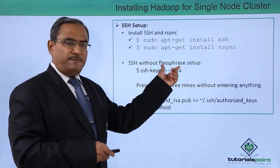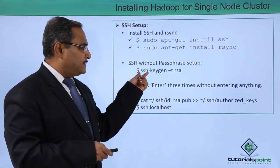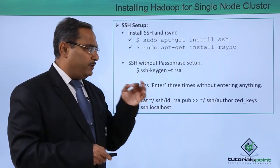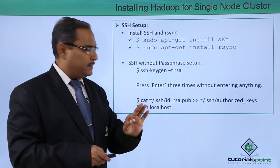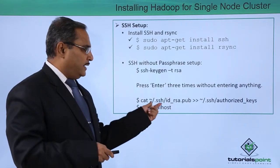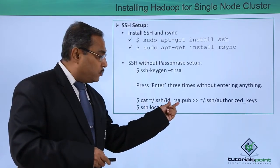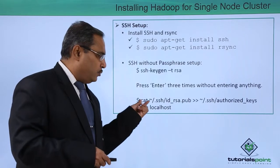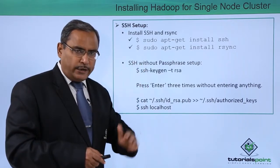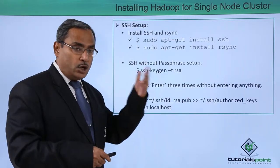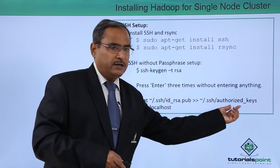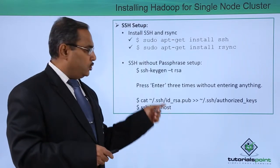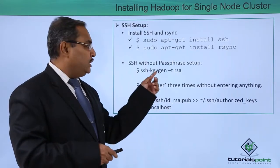For SSH without passphrase setup, the command will be 'ssh-keygen -t rsa'. After that, press Enter three times without entering anything. Then execute: 'cat ~/.ssh/id_rsa.pub'. This file exists under the home path. We are not printing the content to the console but redirecting it to the respective file in that folder. Then execute 'ssh localhost'. These commands are to be executed after pressing Enter three times.